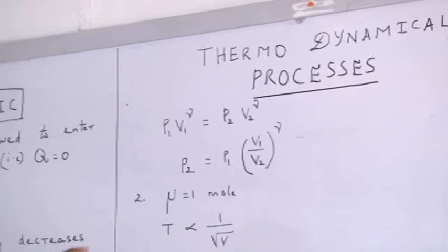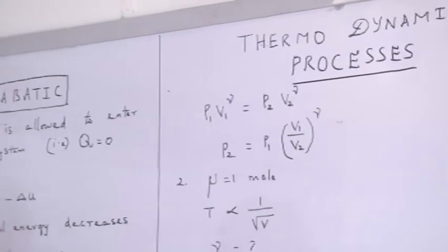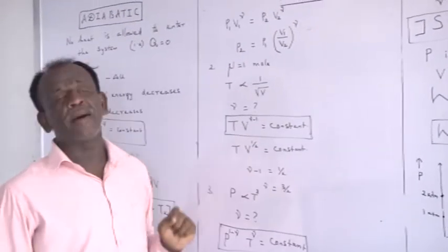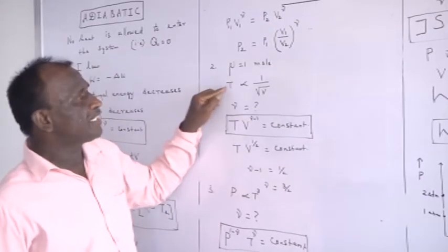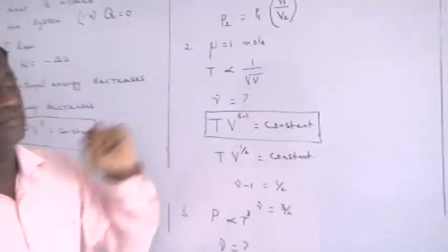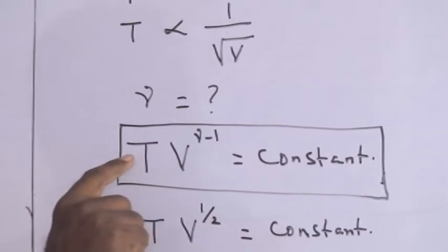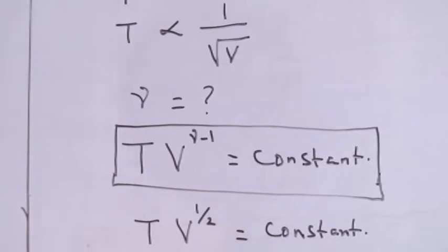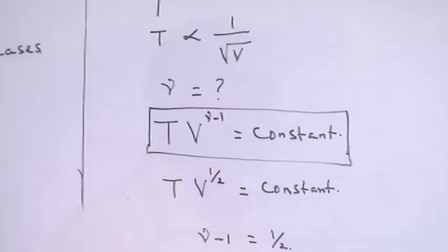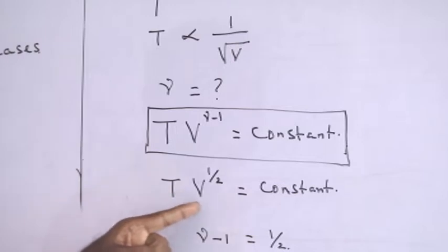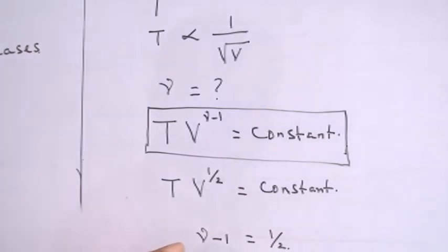In my next illustration, I have considered one mole of a gas subject to the condition that P is inversely proportional to the square root of the volume. I need to find gamma. The equation relating temperature and volume in an adiabatic process is T × V^(γ−1) equal to a constant. From the given condition, T is proportional to 1/√V, which can be written as T × V^(1/2) equal to a constant. Comparing the two equations, γ−1 equals 1/2. Therefore, γ equal to 3/2.